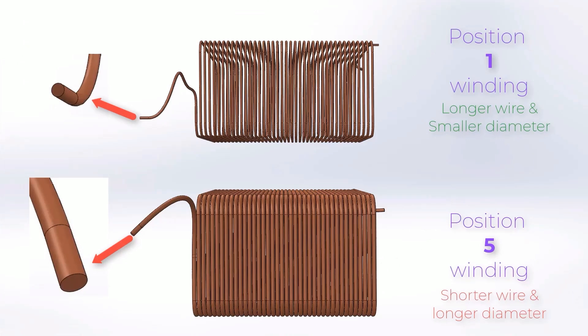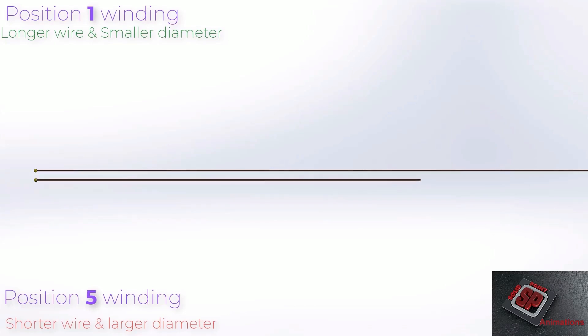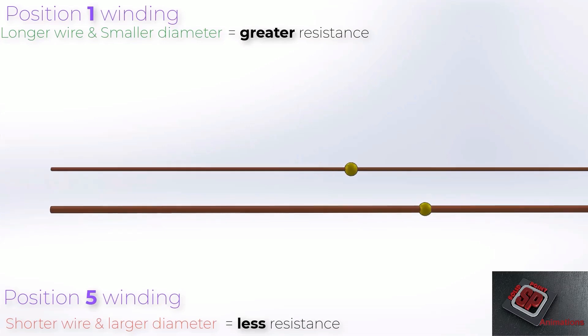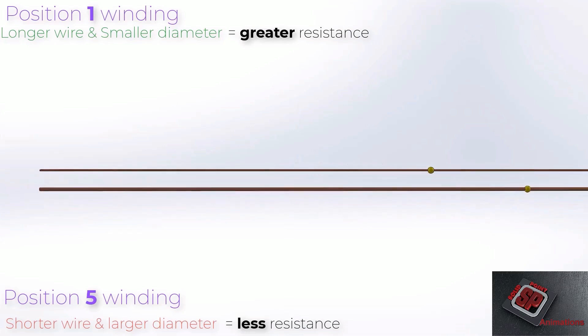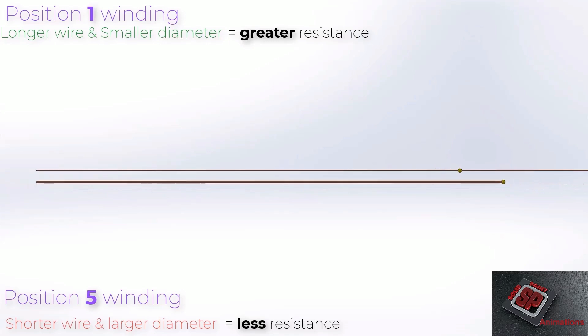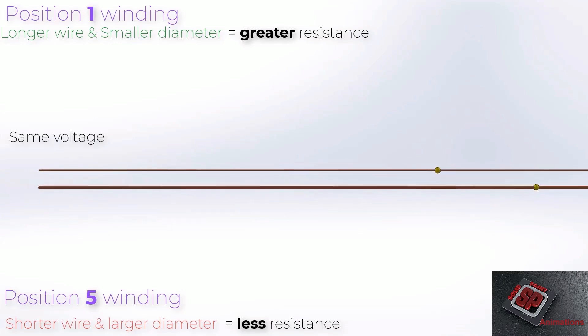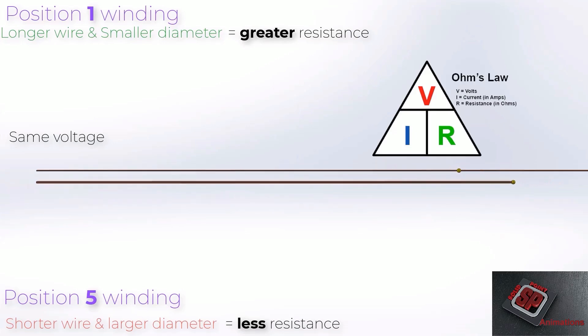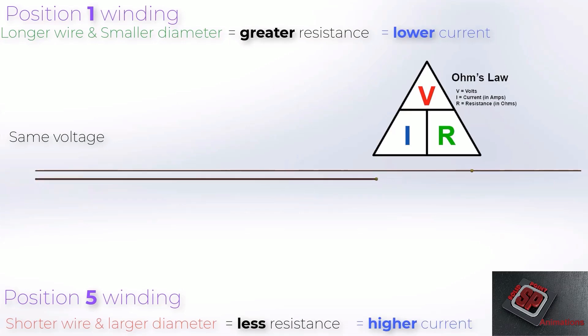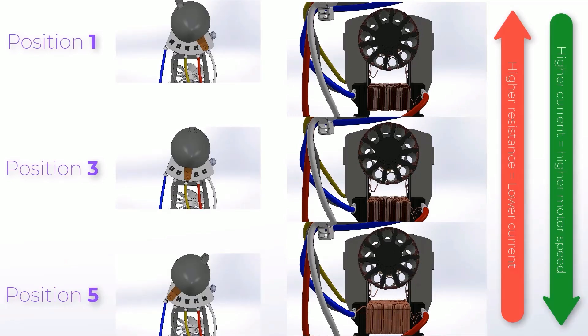So why does it matter if the position one winding is longer and has a smaller diameter when compared to position five? Well, as it turns out, electricity traveling through a longer wire encounters a greater resistance than electricity traveling through a shorter wire. The same is true of the diameter of the wire. Larger diameter wires put less resistance on the electricity traveling through them than smaller diameter wires. So for our hand mixer, position one puts more resistance to the flow of electricity than position five. If both positions receive the same amount of volts going into the device, then according to Ohm's law, position one will have a greater resistance and lower current than all the positions above it. This lowest current gives it the slowest motor speed. As the positions increase, the motor speed also increases because resistance decreases and current to the motor increases. Position five is the fastest of all.